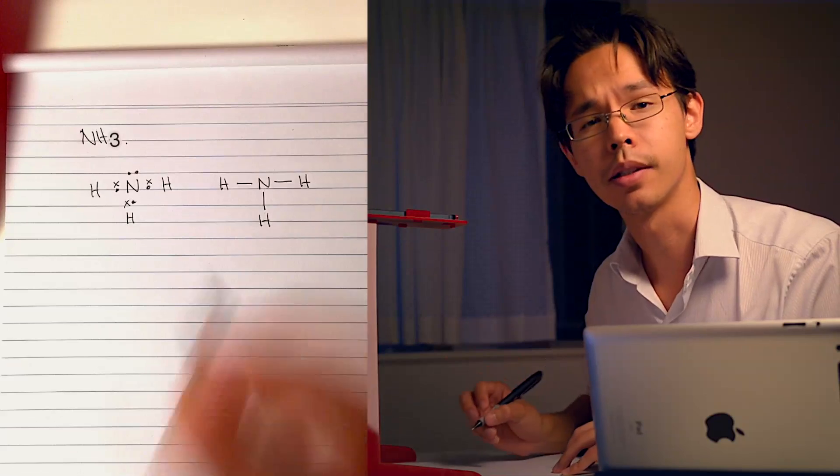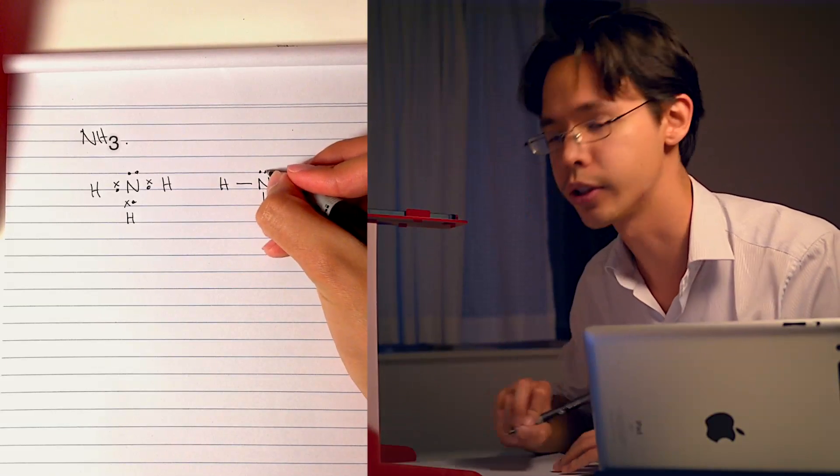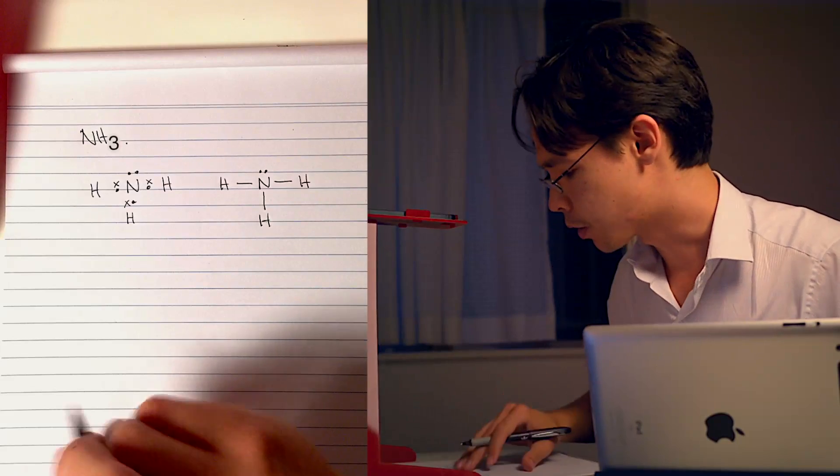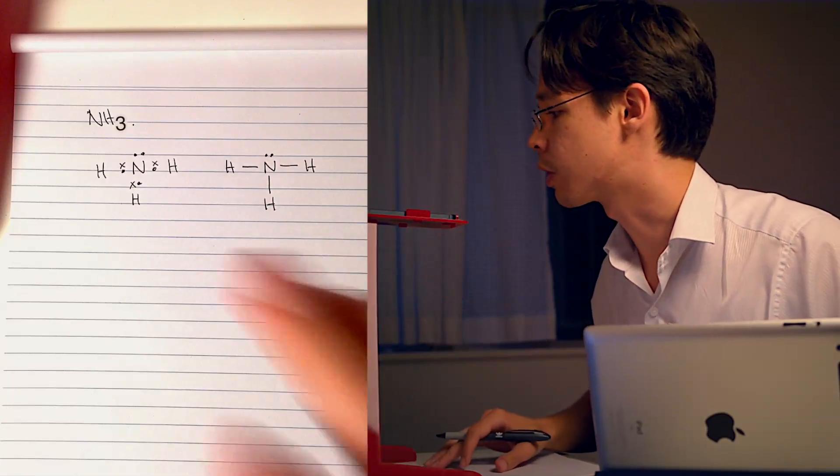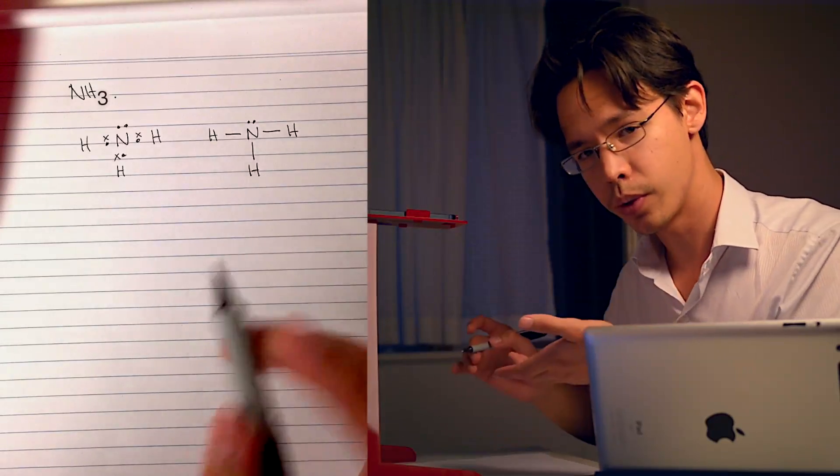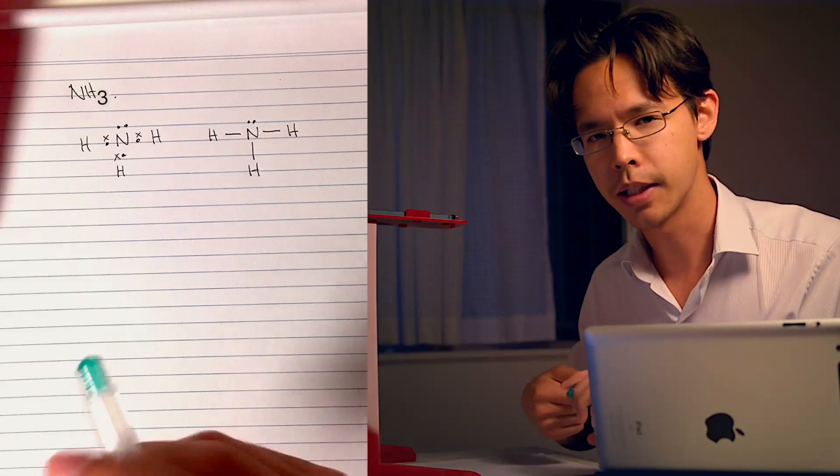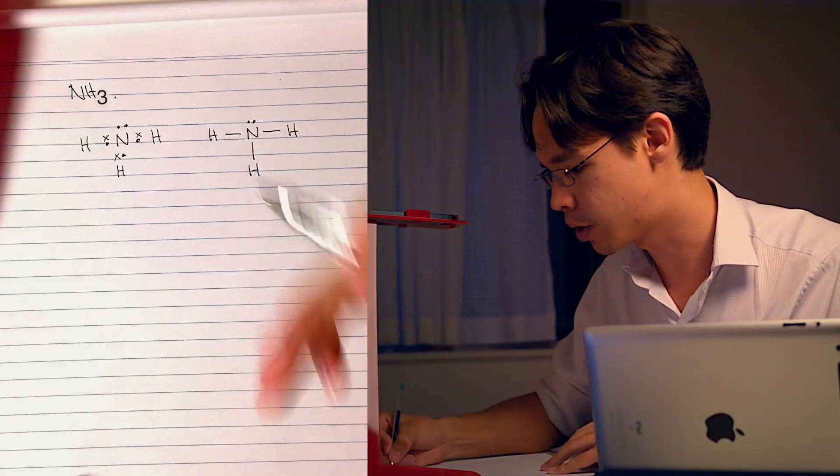When I draw the structural formula it should look like this. In this case, nitrogen's lone pair is important to the three-dimensional shape, so I'm going to keep it there for visualization purposes.